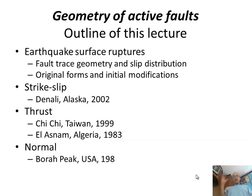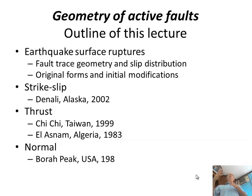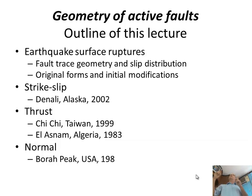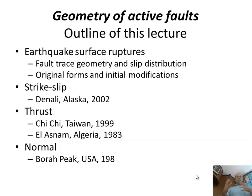The other thing we care about is the original form. What did the rupture look like right when it happened, and how did it erode over time to get covered up? Because in paleoseismology, we have to go back in time in our minds and ask: what did it look like 500 years ago when this earthquake occurred? What happened after that? So: original forms and initial modifications to the rupture.